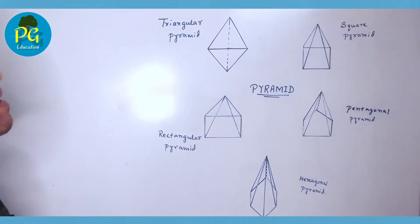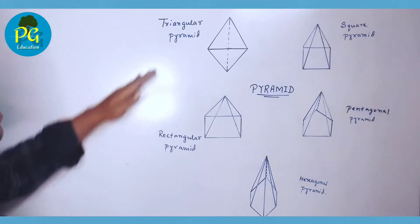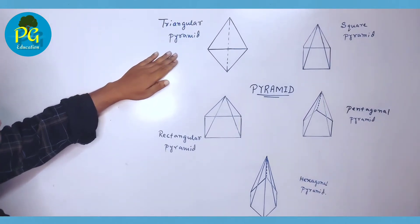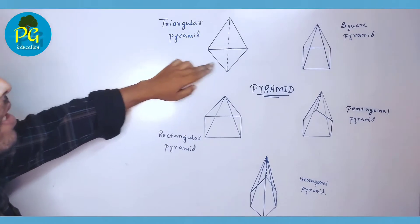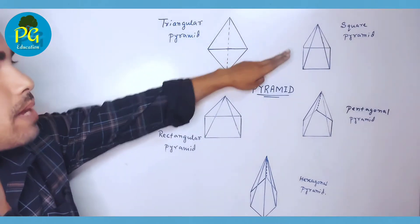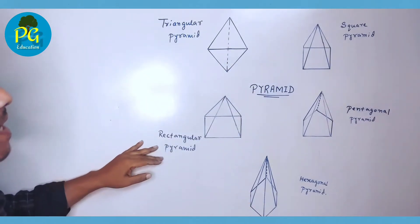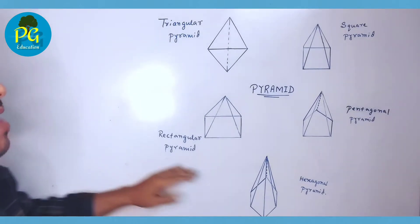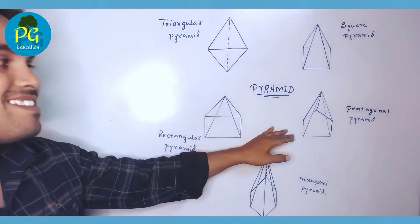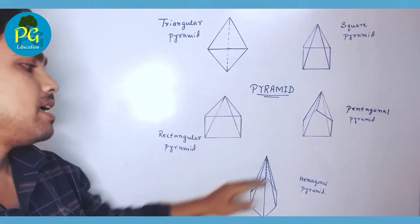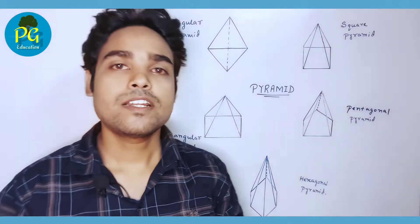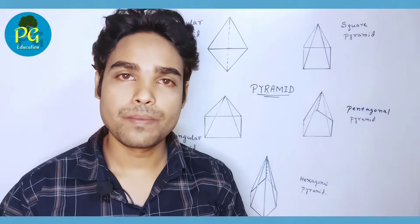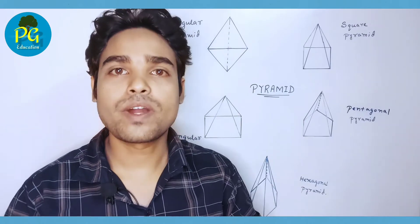We will discuss five types of right pyramid. Number one: triangular pyramid — if the base is a triangle it is called a triangular pyramid. If the base is a square it is called a square pyramid. If the base is a rectangle it is called a rectangular pyramid. If the base is a pentagon it is called a pentagonal pyramid. If the base is a hexagon it is called a hexagonal pyramid.